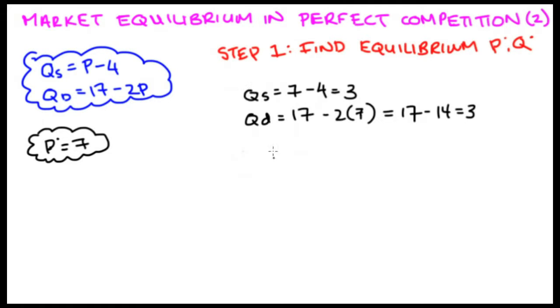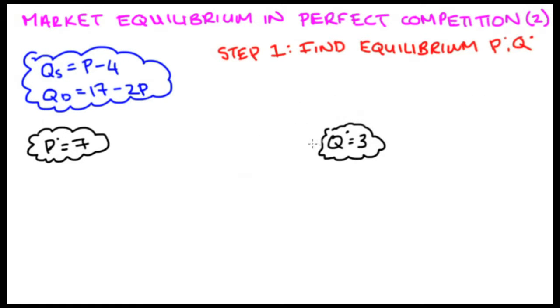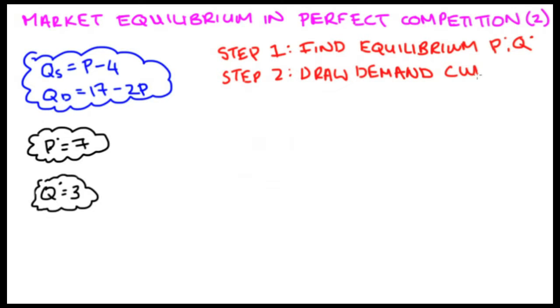So here, by construction, it must be the case that this P is such that our quantity supplied is equal to our quantity demand. Since our quantity supplied is equal to our quantity demand, which is equal to our equilibrium quantity, our Q star is indeed 3. So the second step I'm going to do is draw my demand curve. The first step when we're drawing any curves is to draw our axes. We have Q on the horizontal axes and P on the vertical axes.